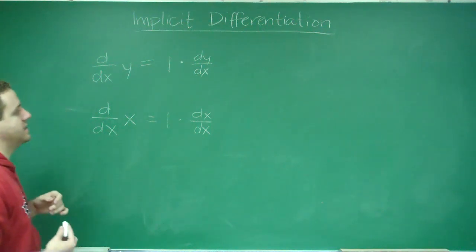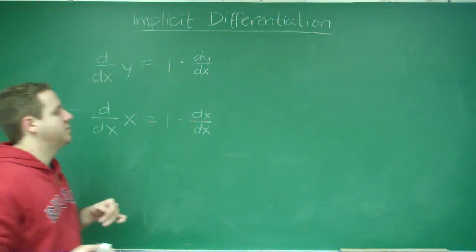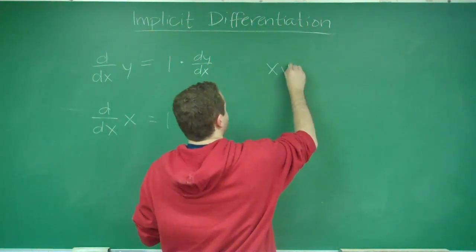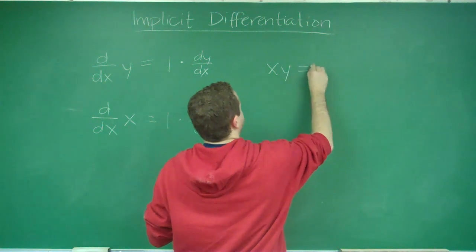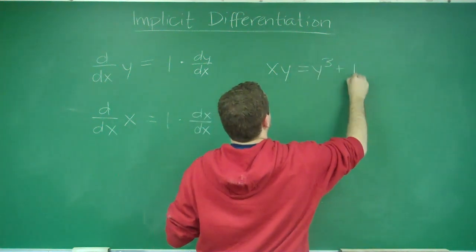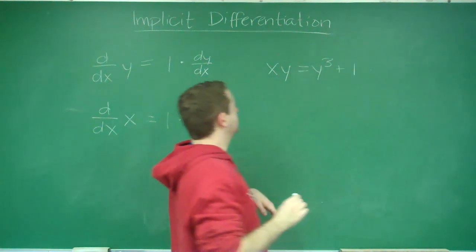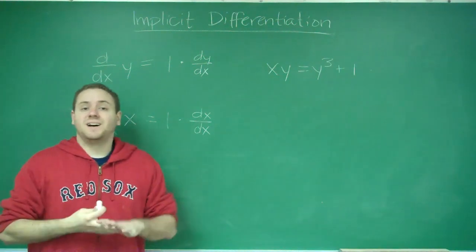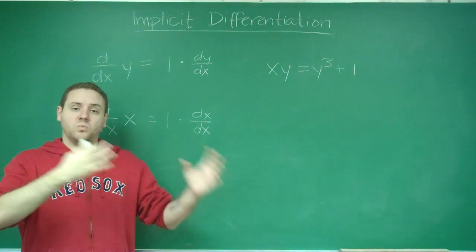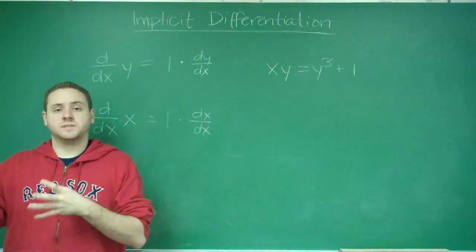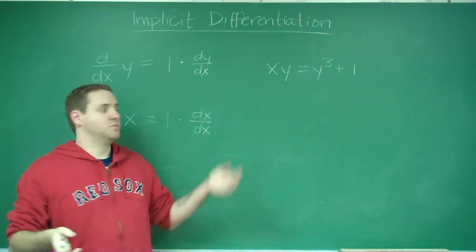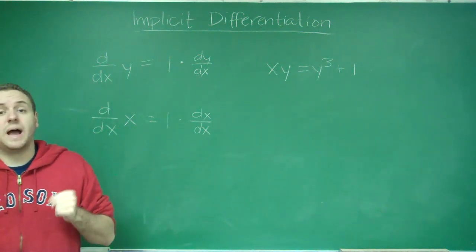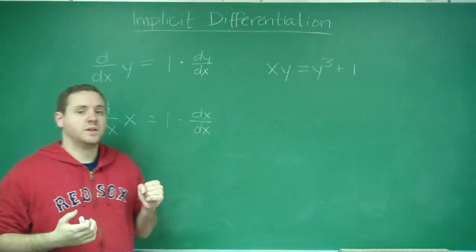Let's do a quick example. Say you have the function xy equals y cubed plus 1. This function — you cannot separate y equals and get it as a function of x to do your derivative normally. You can't do it for this function; you have to do this implicitly.